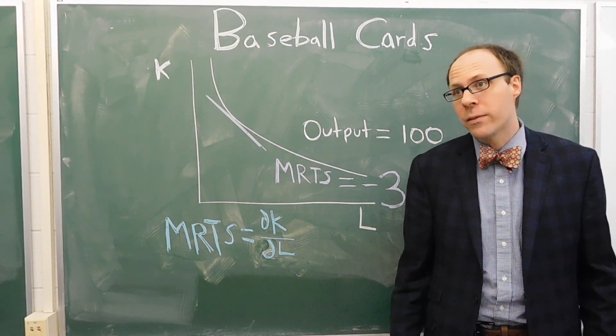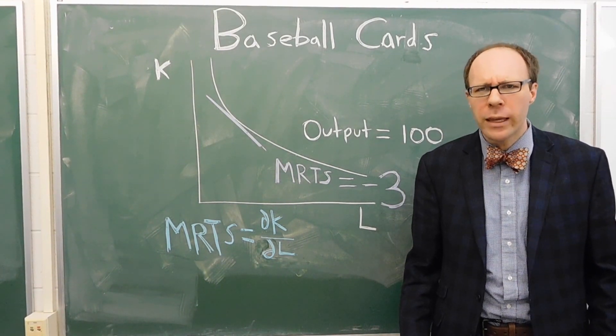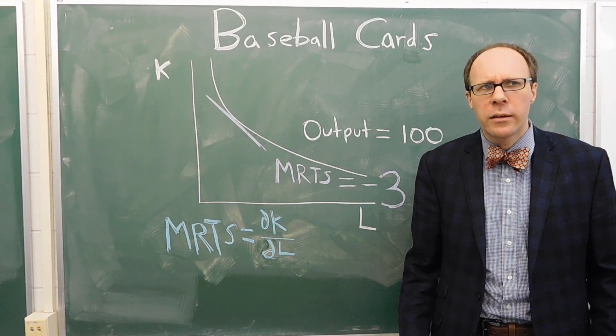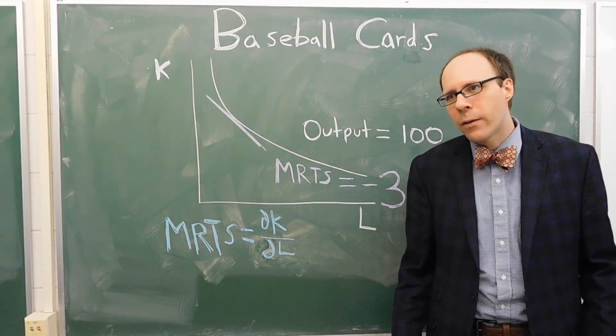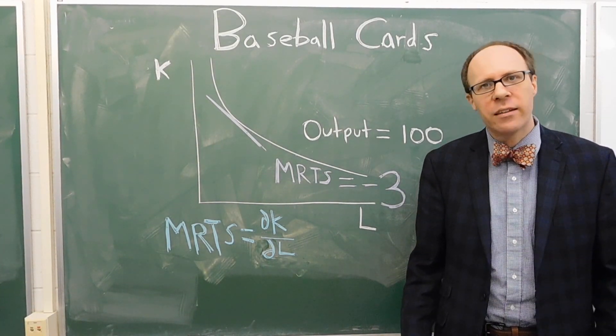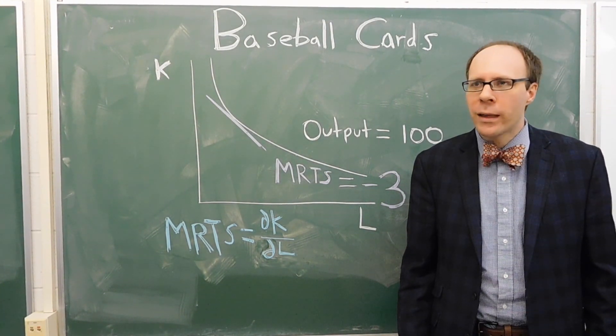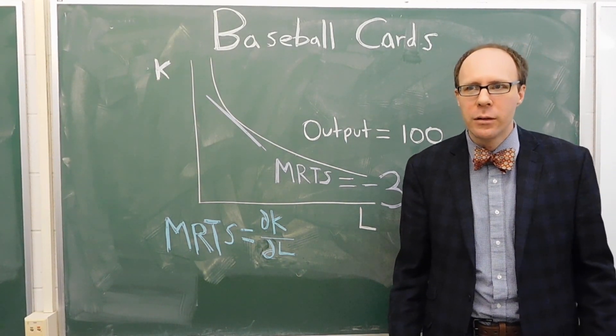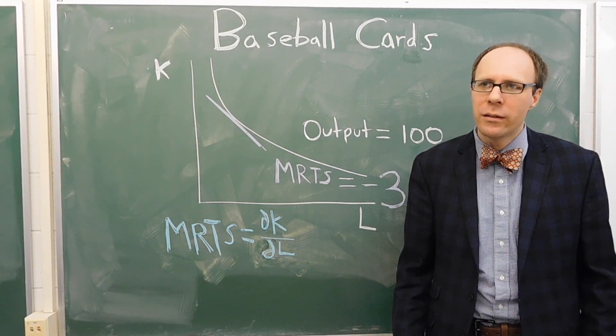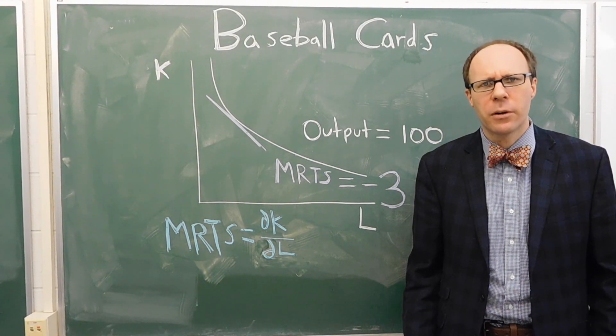And it'll give us a number - in this case we have negative three. What the negative three tells us is that if we were to get one more unit of labor, we could get rid of three units of capital and still produce 100 baseball cards. Or if we want to get rid of one unit of labor, it would take three units of capital in addition to what we're already using to still produce 100 units of baseball cards.